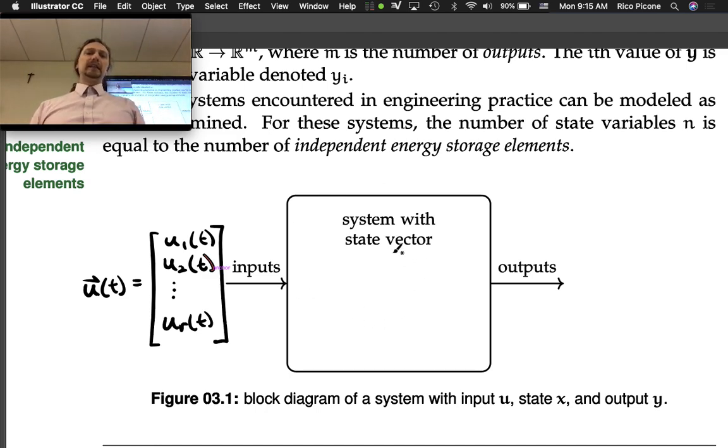Inside the system we have the state variables - the state vector-valued function x(t) equals x_1(t), x_2(t), all the way down to x_n(t).